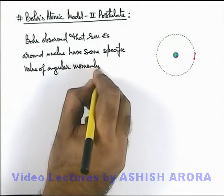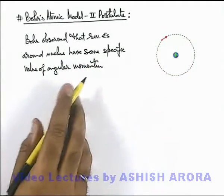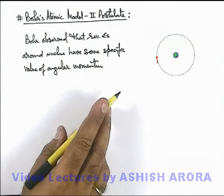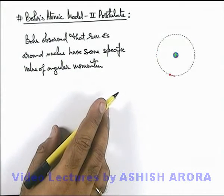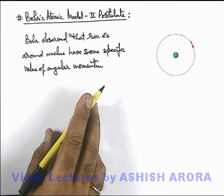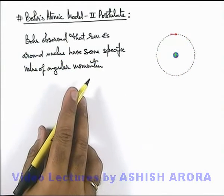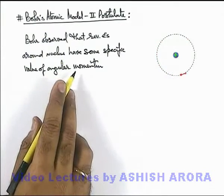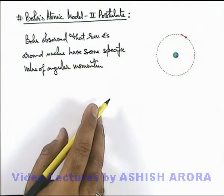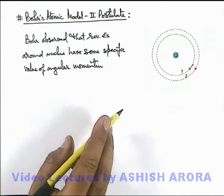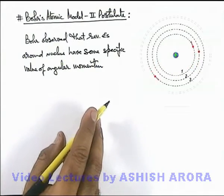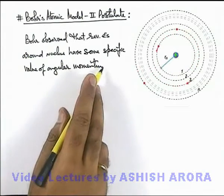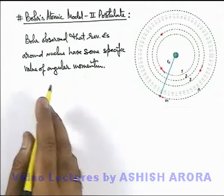We know that when a particle revolves only under the influence of a central force, its angular momentum remains conserved. Bohr observed that the angular momentum of an electron in the surrounding of the nucleus — no matter whether the electron is in the first orbit, second orbit, or any other orbit — has some specific values.